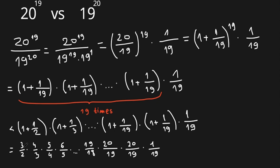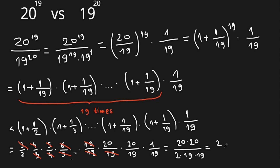Many numbers cancel since they appear once in the denominator and once in the numerator — 3, 4, 5, 6, all the way through 18 and 19 — all cancel. What remains is 20 times 20 over 2, times 19 times 19, which equals 20 squared over 2 times 19 squared.